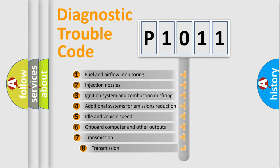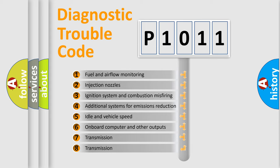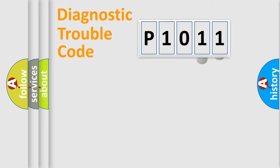The third character specifies a subset of errors. The distribution shown is valid only for the standardized DTC code. Only the last two characters define the specific fault of the group.